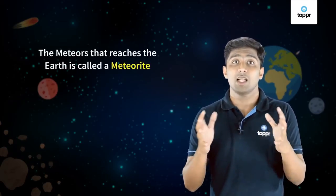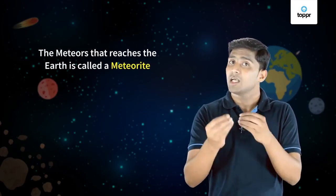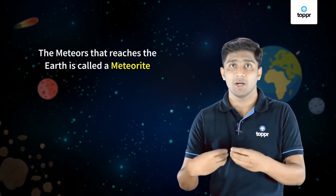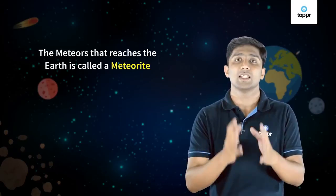Before reaching the Earth's surface, they will usually get evaporated. But because of the larger size, sometimes meteors reach the Earth's surface and these meteors which reach the Earth's surface are called meteorites.